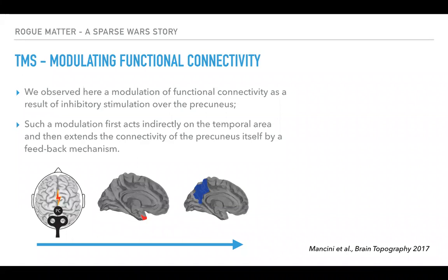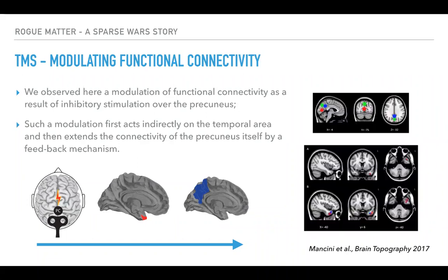Q: Were those individuals cognitively impaired? A: No, healthy subjects, around 30 years old on average, completely healthy — no known memory problems. The left temporal pole finding was quite curious, but it was actually the same thing we could find using just a seed-based analysis on the precuneus itself.